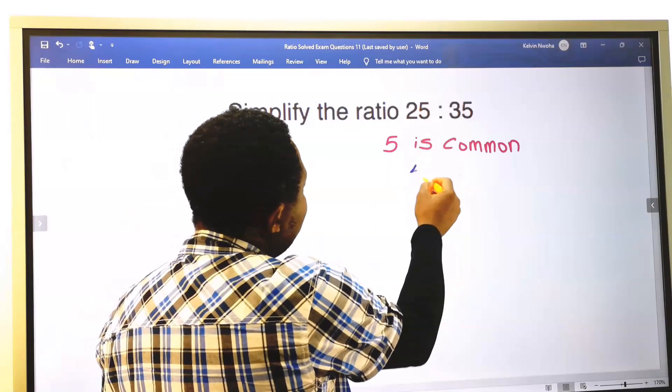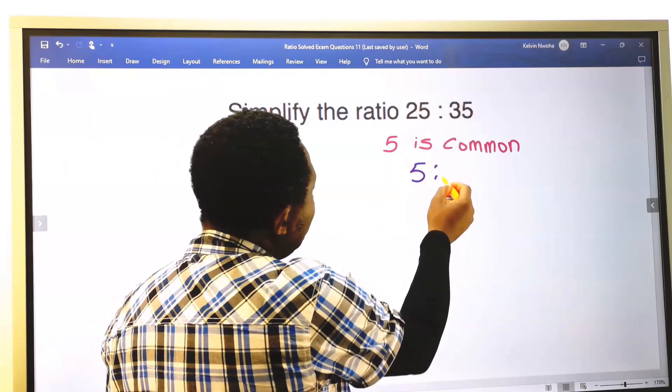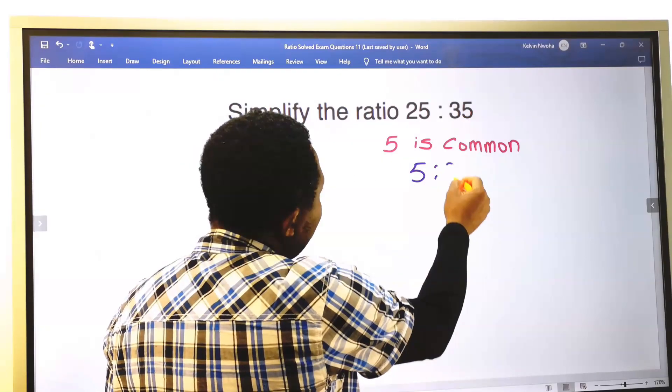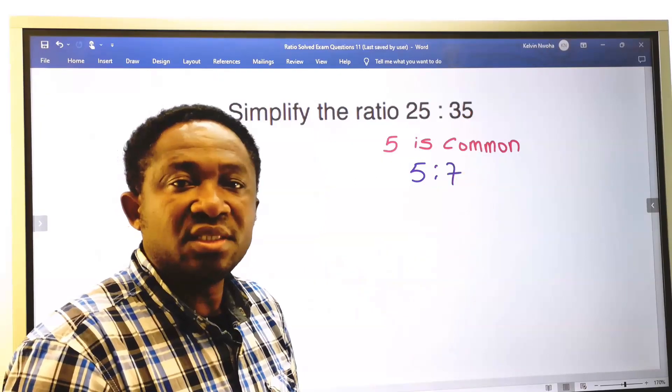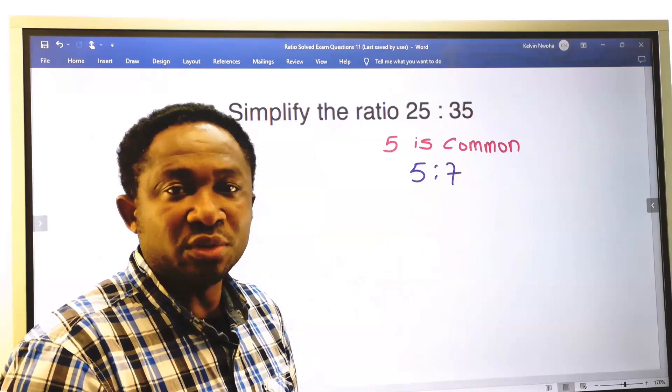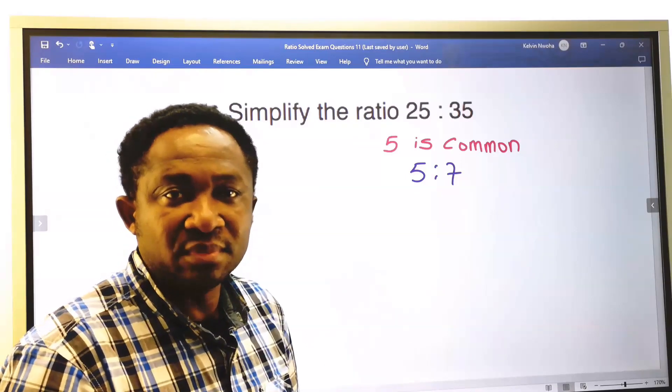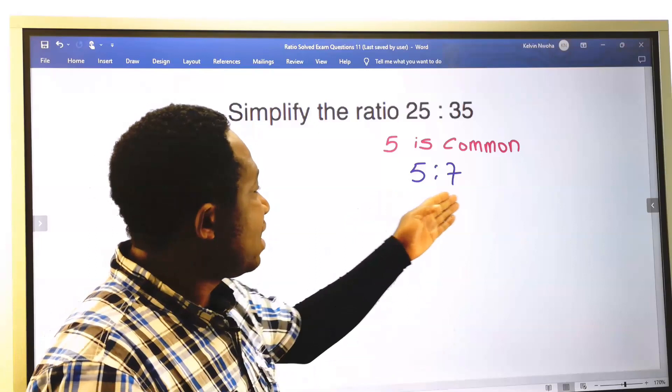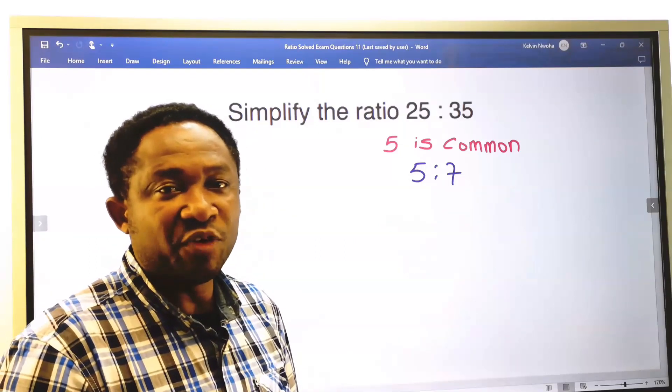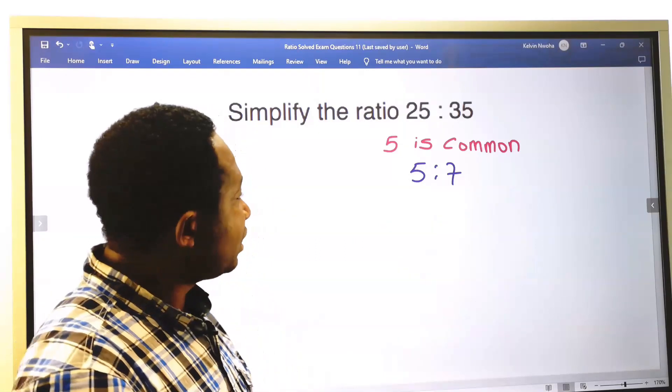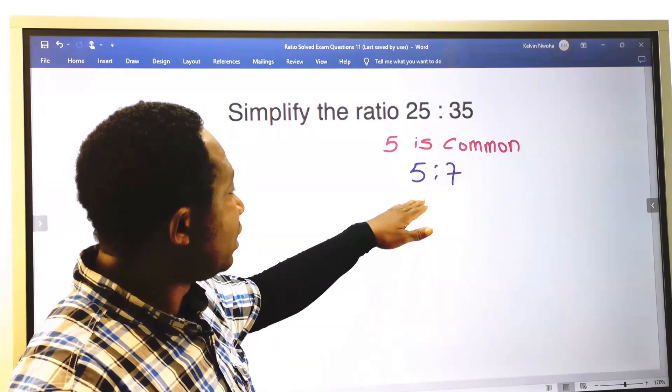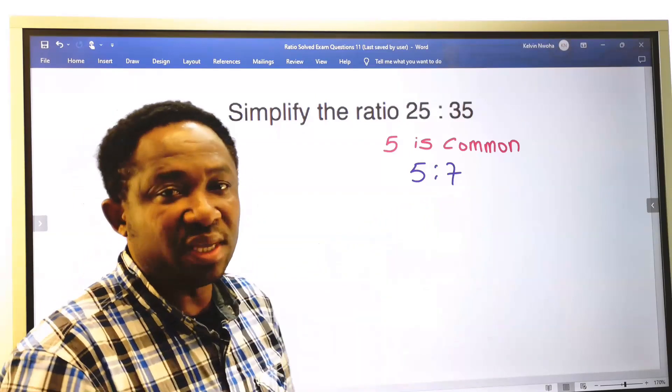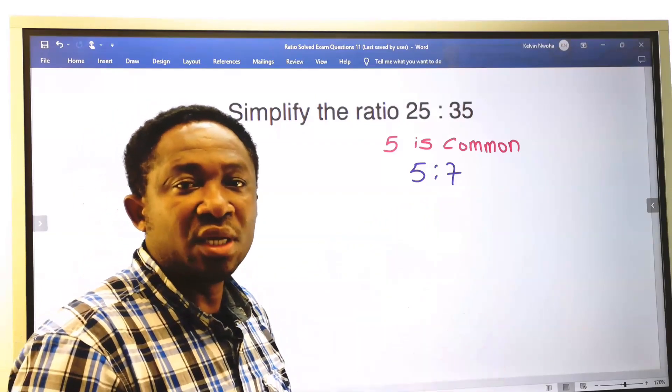5 into 25 is 5, to the ratio 5 into 35 is 7. This is a one-step solution to this problem. We cannot simplify 5 and 7 any further, because there is nothing common that will go into 5 and go into 7 and return a whole number.